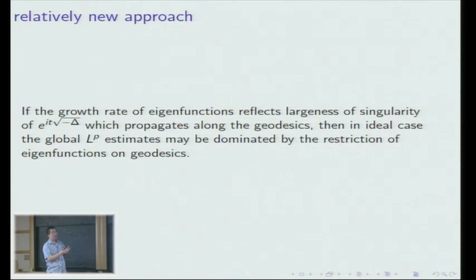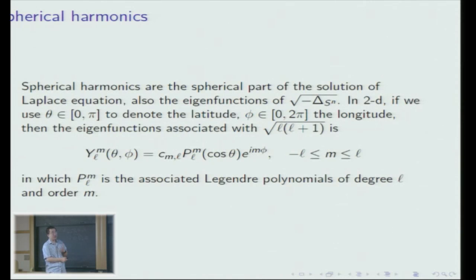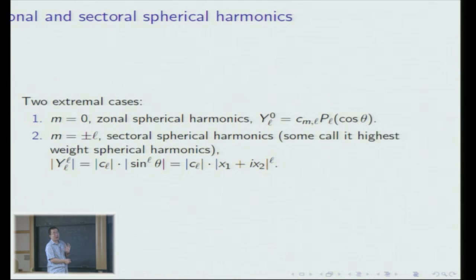Let's look at a motivating example on the 2D sphere. On this surface we have the so-called spherical harmonics. If we parameterize the sphere by θ and φ — the latitude and longitude respectively — we have an expression for the eigenfunctions of the Laplacian: a product of an exponential function and an associated Legendre polynomial. There are two extremal cases: the so-called zonal spherical harmonics in which m equals 0 — giving a classical Legendre polynomial in cosine θ — and the sectorial (or highest weight) spherical harmonics.